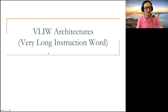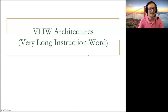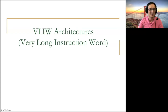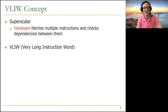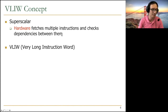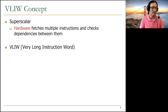VLIW stands for Very Long Instruction Word architectures. This is an instruction set architecture paradigm. The philosophy is: keep the hardware as simple as possible and let software do the hard work to extract parallelism. We've seen the multiple instruction fetch concept before — that's the idea of superscalar processing, where hardware fetches multiple instructions and checks dependencies between them.